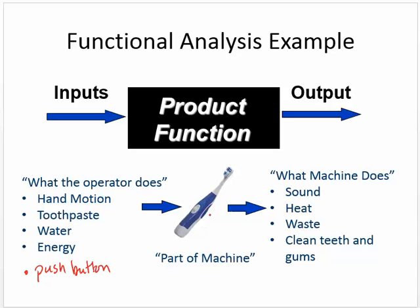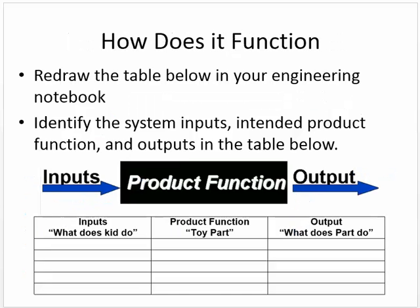Push button. The machine, in this case the toothbrush, so when you push the button, that's the input. The machine, what comes out? The bristles move. So here's an example of when you do something. Hand motion, when you move the hand motion up and down, it cleans the teeth and gums. When you put toothpaste on, what does the machine do? The machine does its thing, and you have waste product. It cleans the teeth and gums. There's all these outputs.